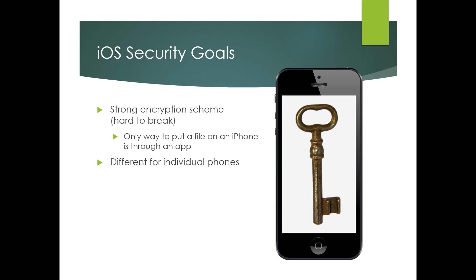They also wanted the encryption scheme to be different for different phones, so that if a hacker got hold of a phone and broke the encryption on that phone, they would not have the encryption keys for every single iPhone — it couldn't be a wholesale invasion of phones. Also, tying the encryption to the passcode means that if you want to change your encryption keys, all you have to do is change your passcode. And they wanted something that would have a fast wipe and reset. Apple came up with an absolutely brilliant way to do it.